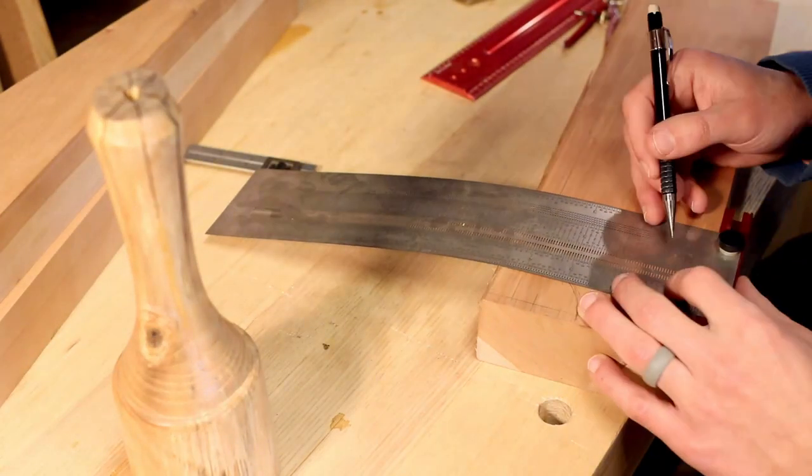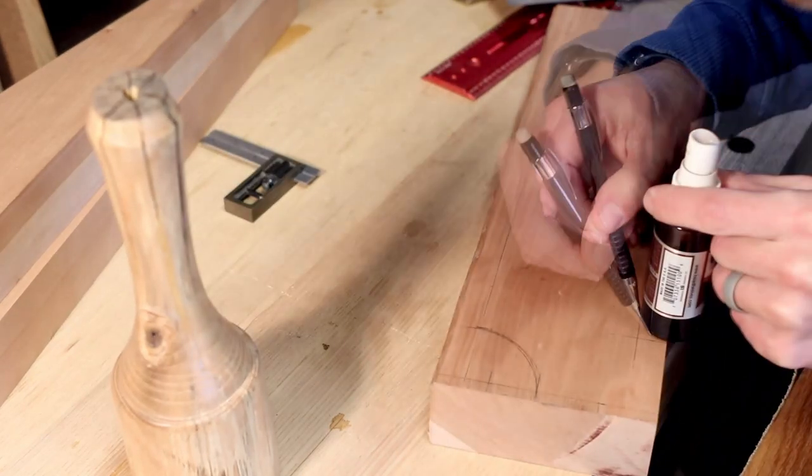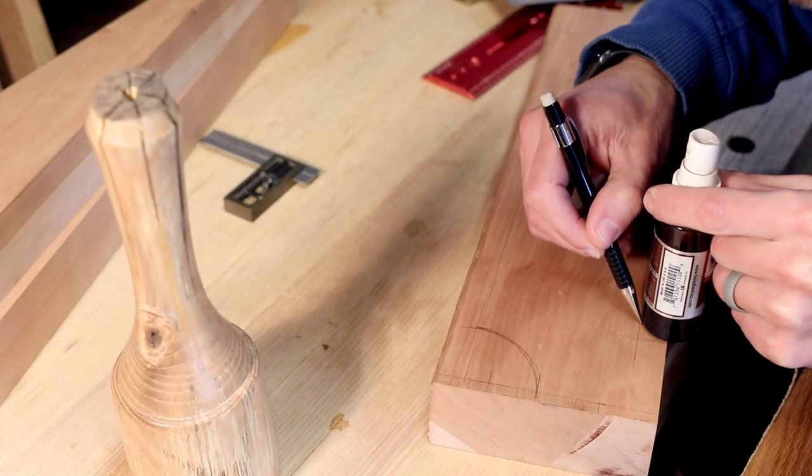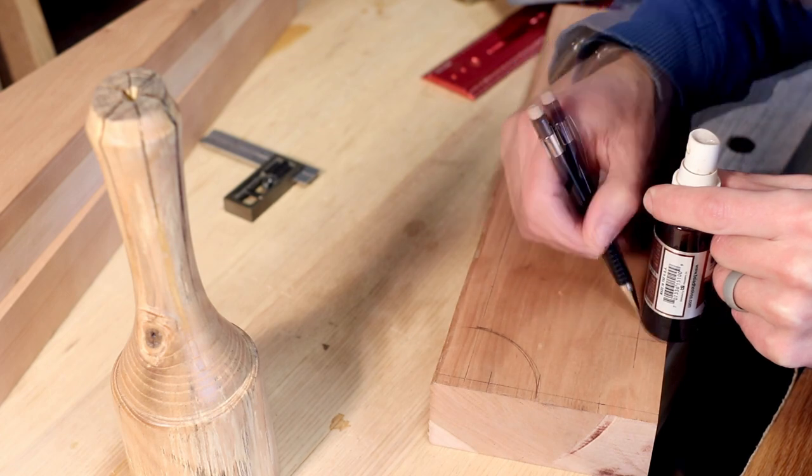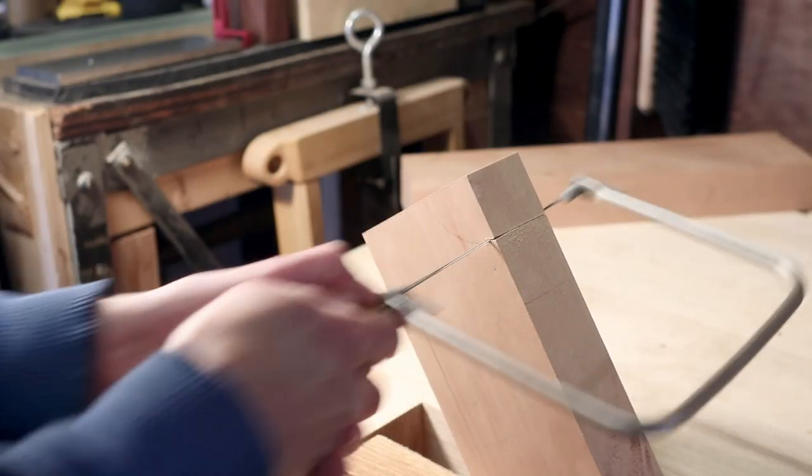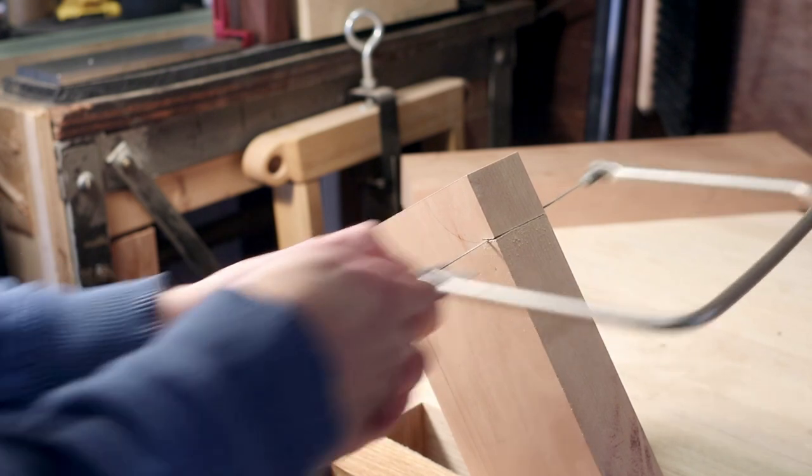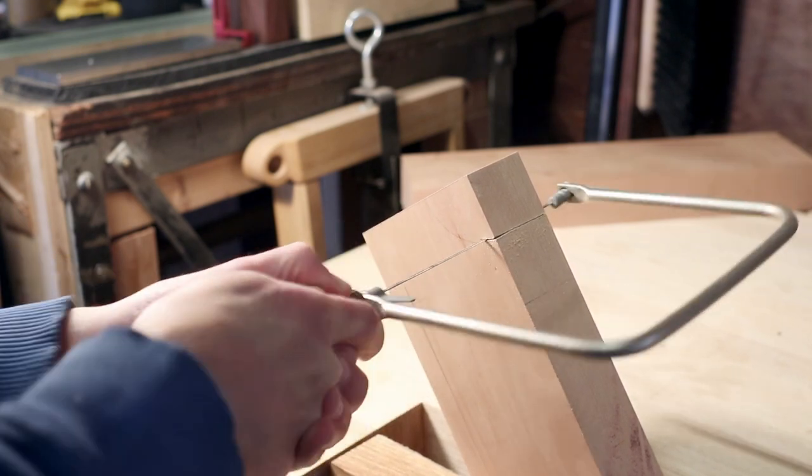For the bottom, I just use whatever I can find to make sure those circles are smooth. Then I cut it out with a fret saw and clean it up with a rasp.